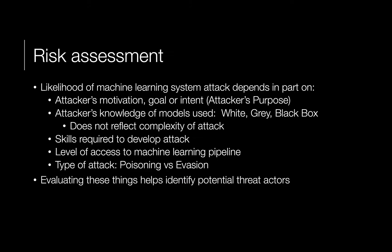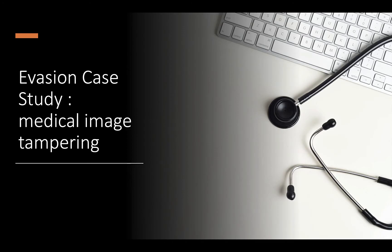In assessing the risk of a machine learning system attack, it depends on the motivation of the attacker, the knowledge the attacker had of the model — whether it was white, gray, or black box — and that doesn't necessarily reflect the complexity or skill required. It also depends on the level of access to the pipeline and the type of attack, such as poisoning or evasion. This helps identify potential threat actors and the risks involved.